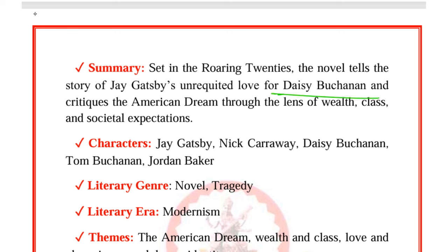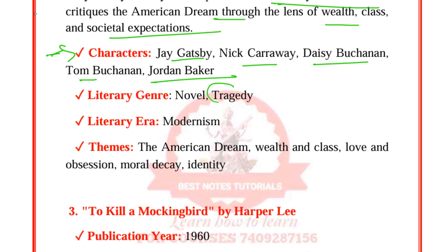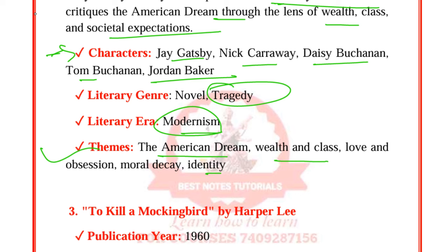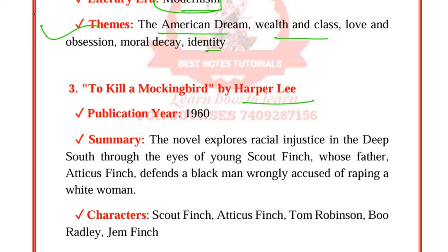To Kill a Mockingbird by Harper Lee was published in 1960. The novel explores racial injustice in the deep South through the eyes of young Scout Finch, whose father Atticus Finch defends a Black man wrongly accused of raping a white woman. Key characters are Scout Finch, Atticus Finch, Tom Robinson, Boo Radley, and others. The literary genre is Southern Gothic and coming-of-age. Themes include racial injustice, morality, innocence, empathy, and the coexistence of good and evil.